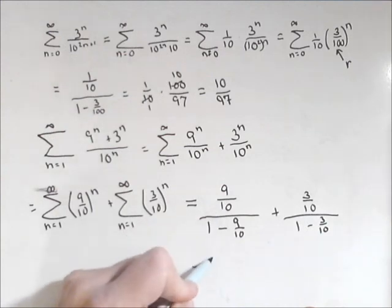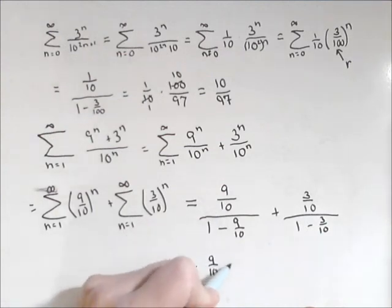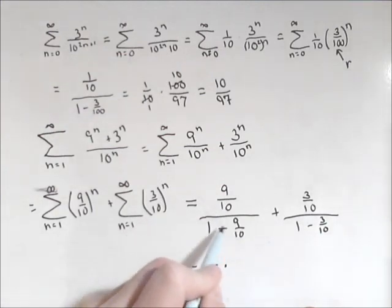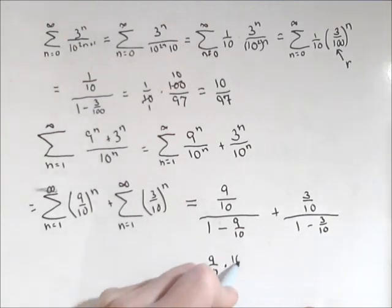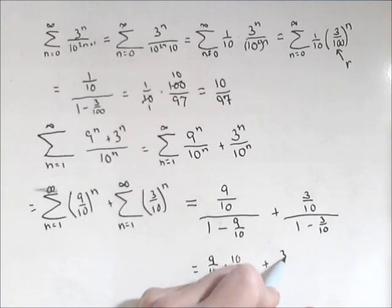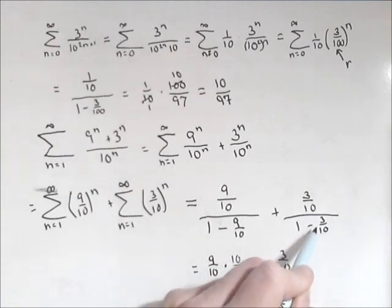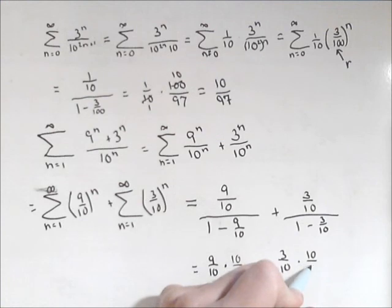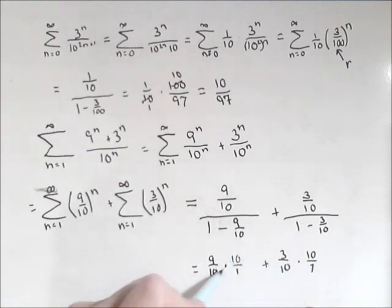So the first one we're going to have 9 tenths times, well we're dividing by 1 tenths, that's the same thing as multiplying by 10 over 1, plus 3 tenths. This will be 7 tenths, so we're going to multiply by 10 sevenths. Those tens cancel. For this first one we get 9, and for this one we get 3 sevenths.